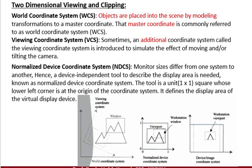Hello everyone, today we will discuss two-dimensional viewing and clipping in computer graphics. We have discussed the world coordinate system (WCS), the viewing coordinate system (VCS), and the normalization device coordinate system (NDCS). The normalization device coordinate system means transferring the real world into your viewing device, which can be a mobile or a laptop.